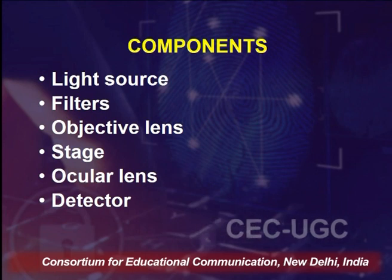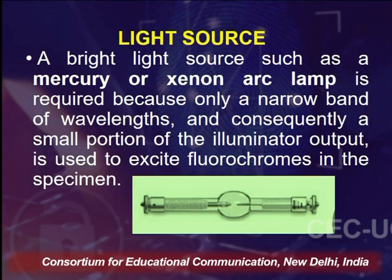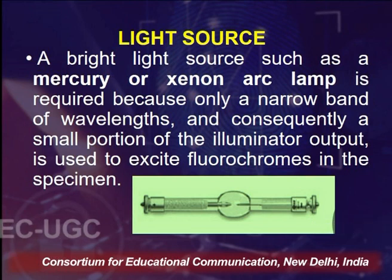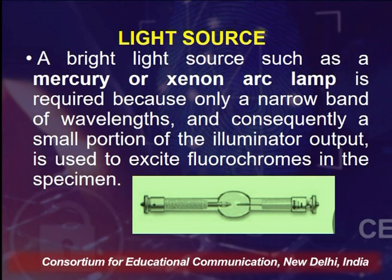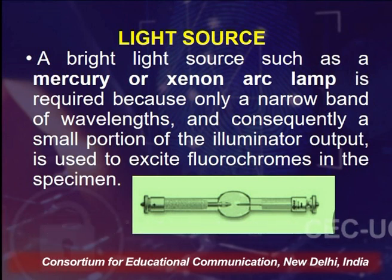The components of the fluorescence microscope include a light source, filters, objective lens, stage, ocular lens, and the detector. The light source could be a bright source such as a mercury or xenon arc lamp, which is required because only a narrow band of wavelengths — and consequently a small portion of the illuminator output — is used to excite the fluorochromes in the specimens.